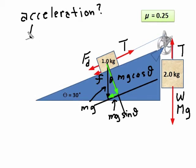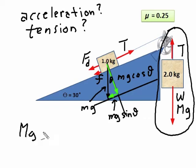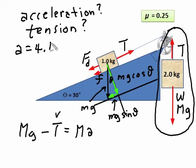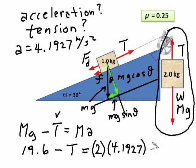Now we have the acceleration and we want to find the tension. We can pick any equation we want — let's pick the one with only two forces acting. I have big Mg minus the tension equals big M times A. I know everything except the tension. A we found was 4.1927 m/s². Putting in everything: 19.6 minus the unknown tension equals 2 times that acceleration. Solving this gives the tension is 11 newtons.